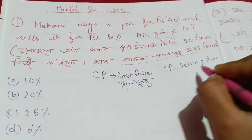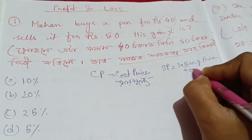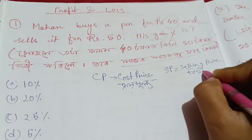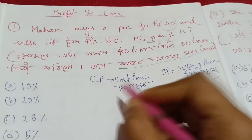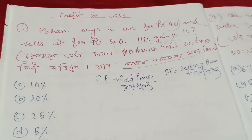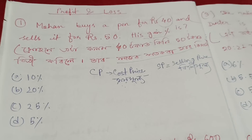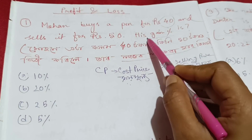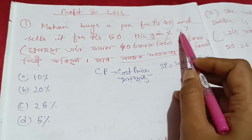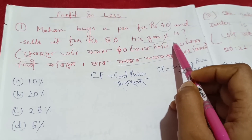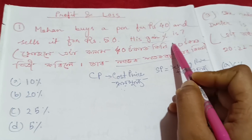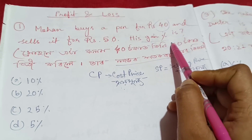Selling means vikri moil — the price at which you sell. Now what does this help us calculate? His gain percentage. Labhor hotkora harba tu — we will calculate the gain percentage from this.